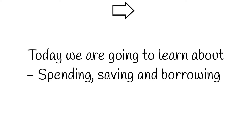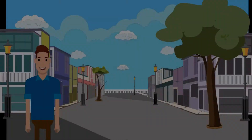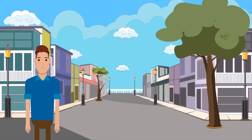People will divide their disposable income between spending and saving. The more disposable income people have, the greater their potential consumer expenditure. People will consume those goods and services that provide them with the most satisfaction or utility. Utility is a term in economics that refers to the total satisfaction received from consuming a good or service.